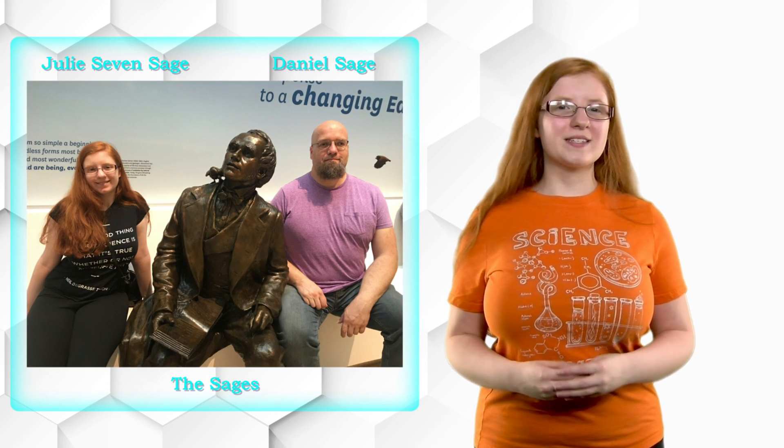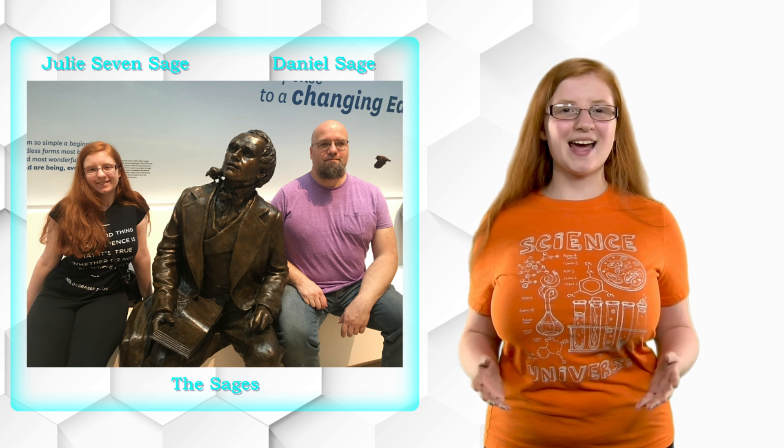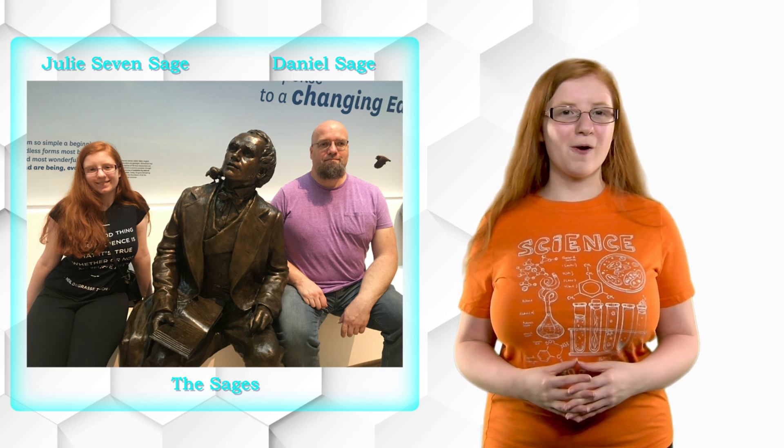We are the Sages. The team is comprised of myself, Julie Seven Sage, a 16 year old science communicator and scientist, and my dad, Daniel Sage. I am the designer and illustrator and my dad is the design consultant and is helping me with building the prototype.